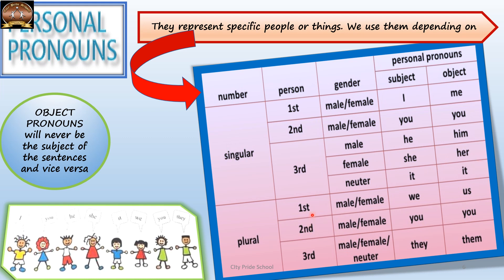On the basis of gender — masculine, feminine, and neuter — I and me are common pronouns used for both male and female. You is also common for both genders. He and him represent the male gender. She and her are used for female nouns. It is used to replace a neuter gender noun. For plural pronouns, we and us are used for both male and female, you is again for both, and they and them are used for male, female, as well as neuter gender.